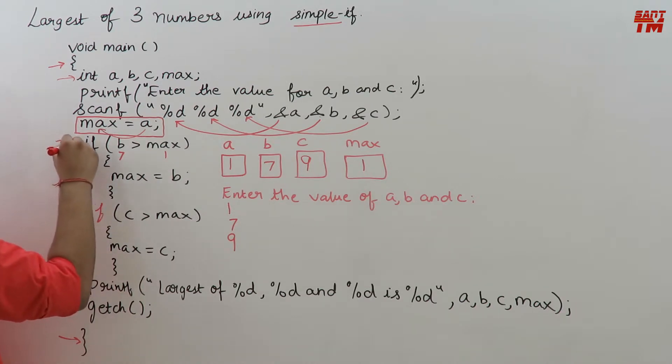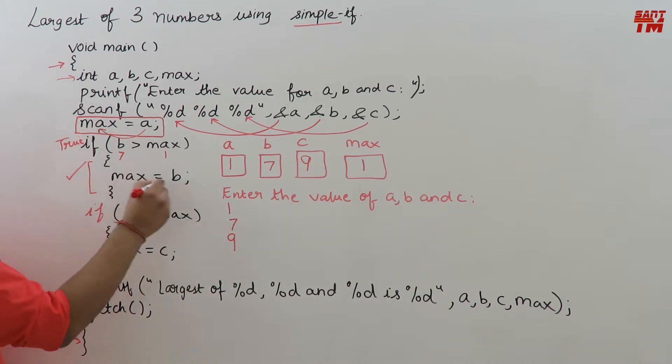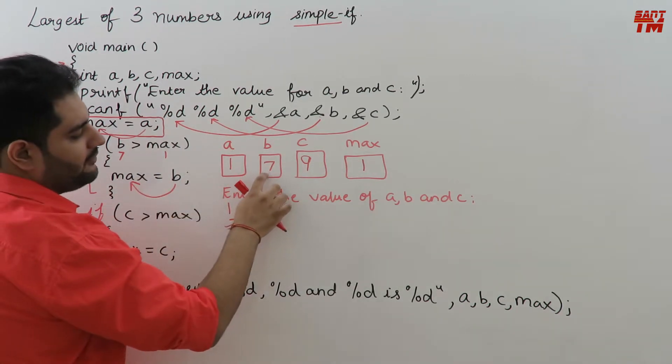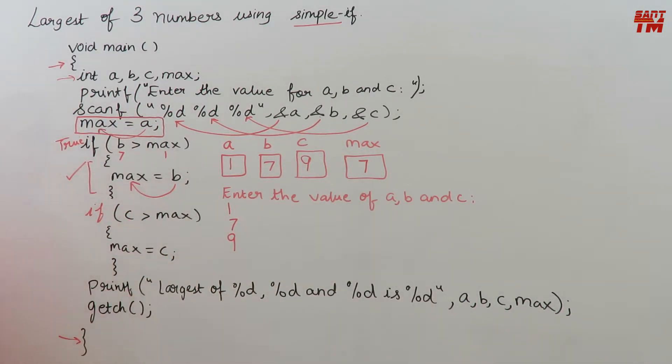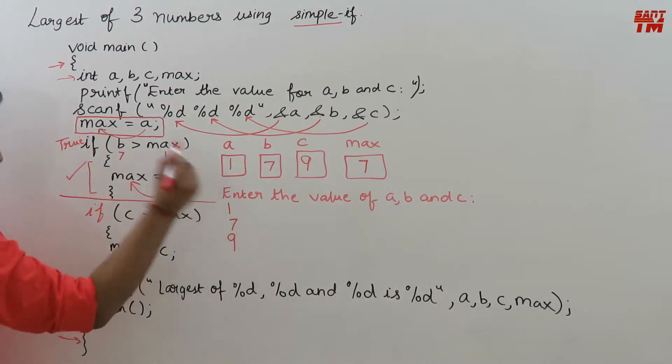Yes, the if condition is true. When the if condition is true, its block will get executed. Then max will get the value from b. That means the value of b will be copied to max. Now max is having 1. But when b is copied to max, max will now hold the value of b that is 7. That is now max will update its value to 7. Now this part of the program is over.